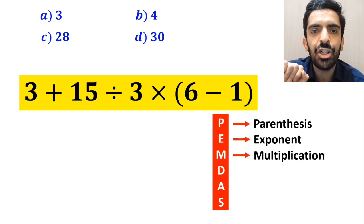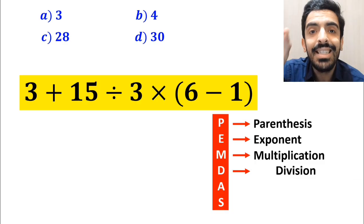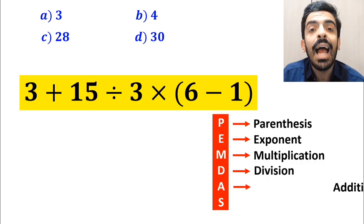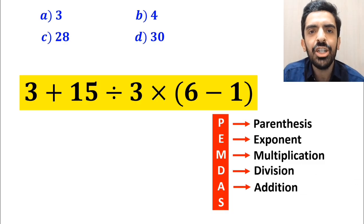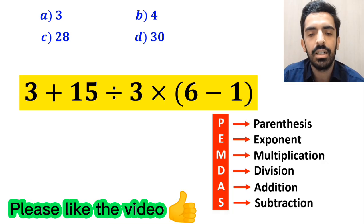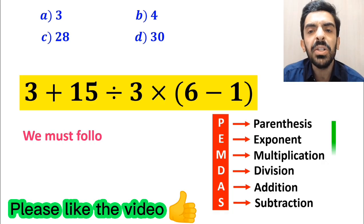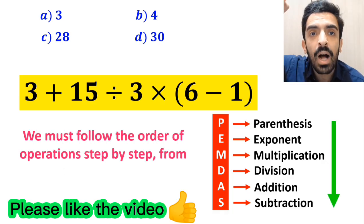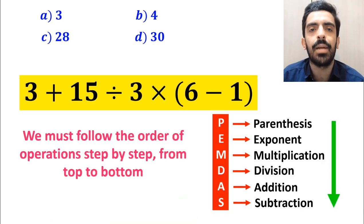M stands for multiplication, D stands for division, A stands for addition, and S stands for subtraction. We must follow the order of operations step by step from top to bottom.